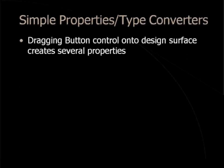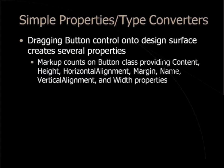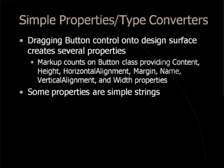Dragging a button control onto the XAML design surface creates several properties. The markup counts on the button class having a content property, a height property, horizontal alignment, margin, name, vertical alignment, and width properties — because by default all of those get created in the markup, and there have to be corresponding properties in the button class in the .NET framework. Some properties are just simple strings — for example, the content and name properties of the button were just strings like 'button1' or 'click me'.